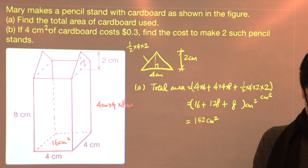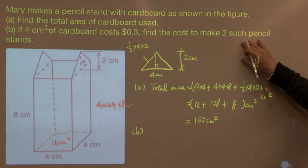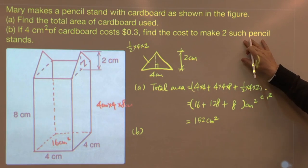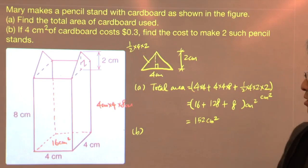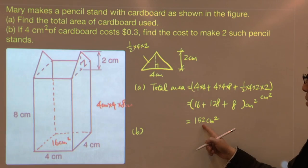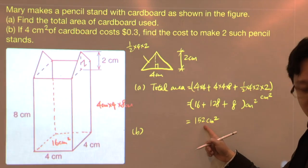And now we can move on to part b. If 4 cm square of cardboard costs $0.3, find the total cost to make two such pencil stands. So the area of one pencil stand is 152 cm square.